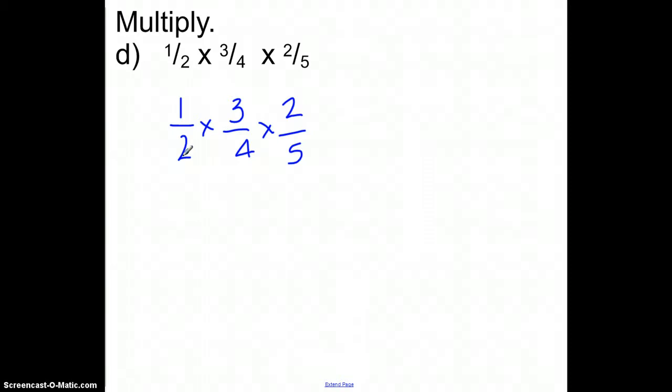Really I want to look at anything that is on the top and anything on the bottom that could pair up. These 2s I could reduce. I could reduce this 4 and 2 as long as 1 is on the top and 1 is on the bottom. Let's just do the 4 and 2. 2 would go into both of those. 2 would go into itself once and into here twice.